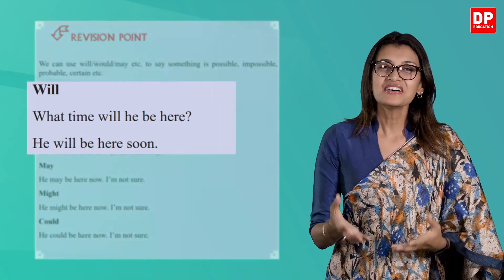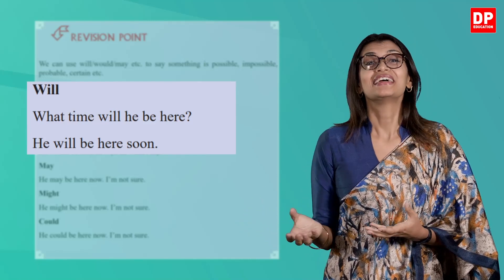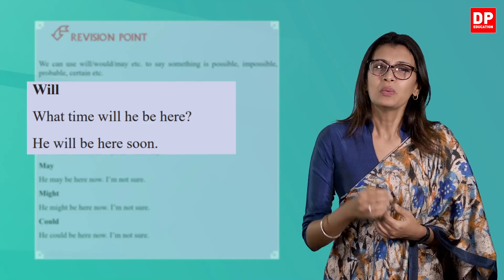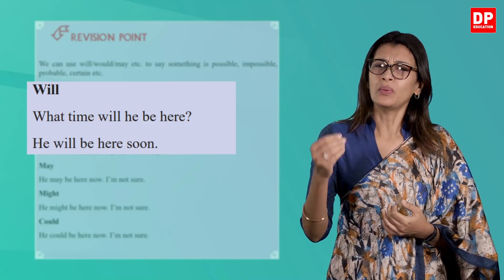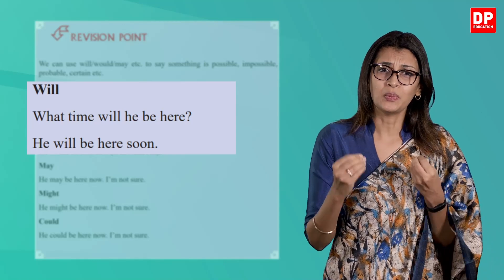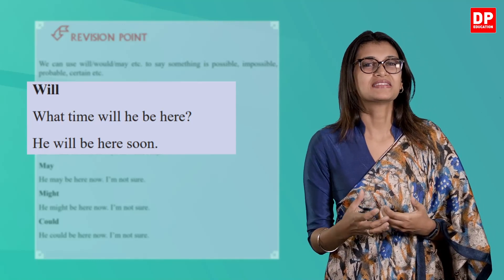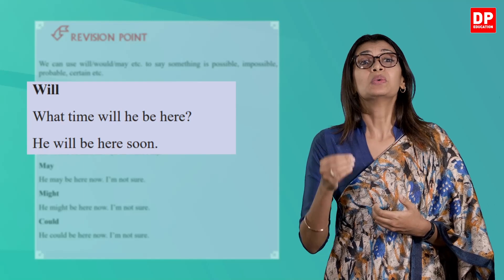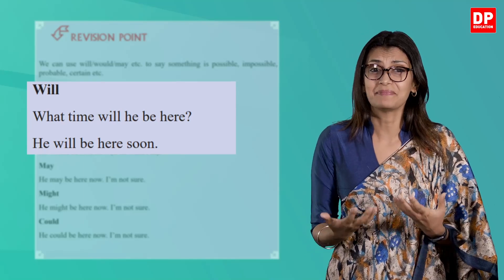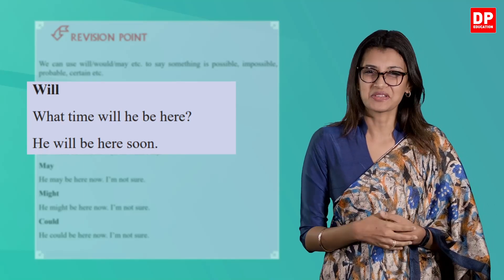The first modal verb presented is 'will.' What time will he be there? He will be here soon. This shows that the person concerned will most definitely be here soon — it is possible.